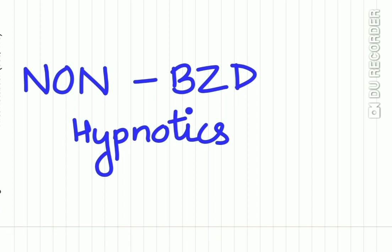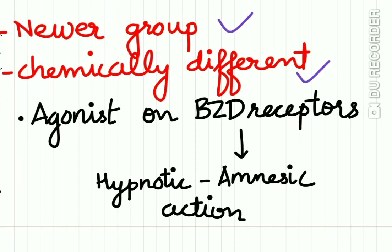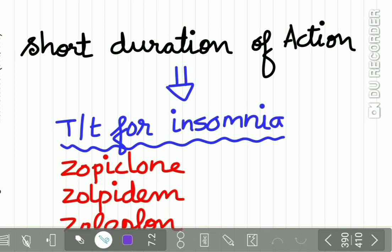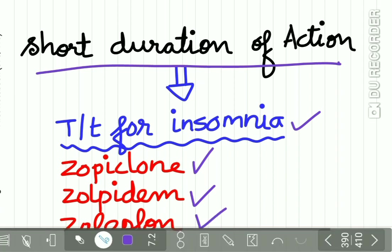Now, the non-benzodiazepine hypnotics: these are a newer group which are chemically different from benzodiazepines but are agonists at the benzodiazepine receptors, producing hypnotic and amnesic action. Because of their short duration of action, non-benzodiazepine agonists can be used for treatment of insomnia. This group includes Zopiclone, Zolpidem, and Zaleplon — let us study each in detail.